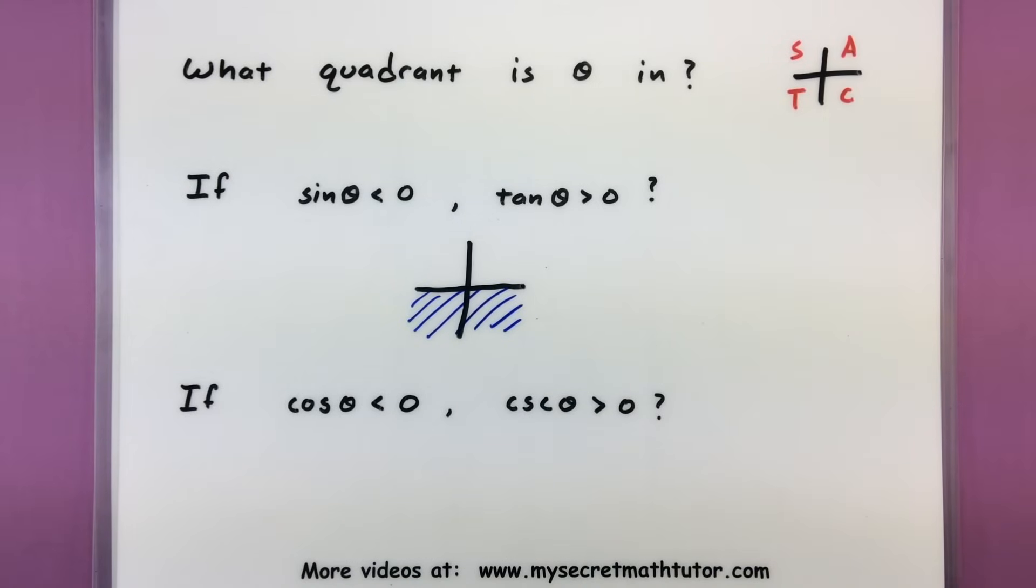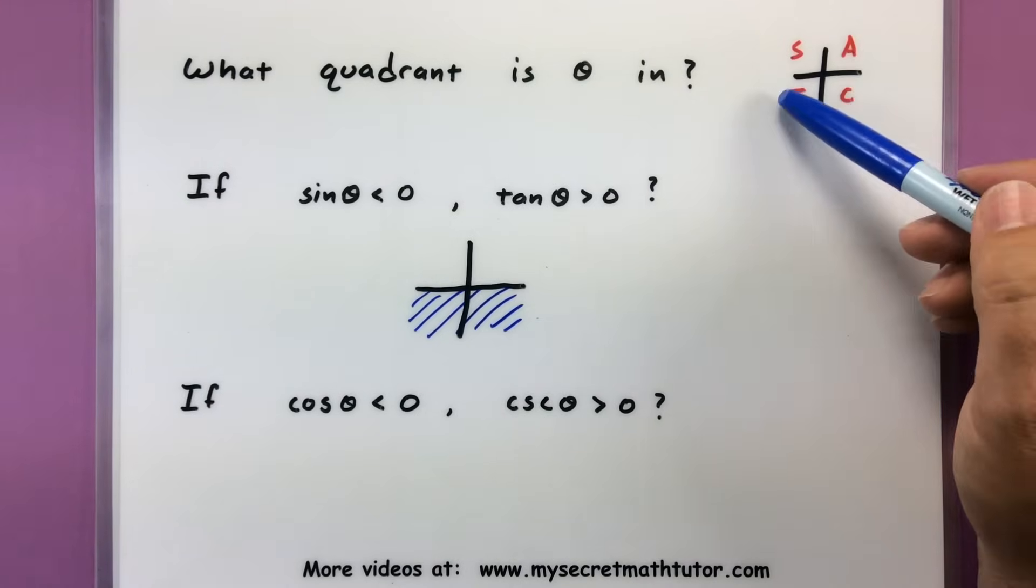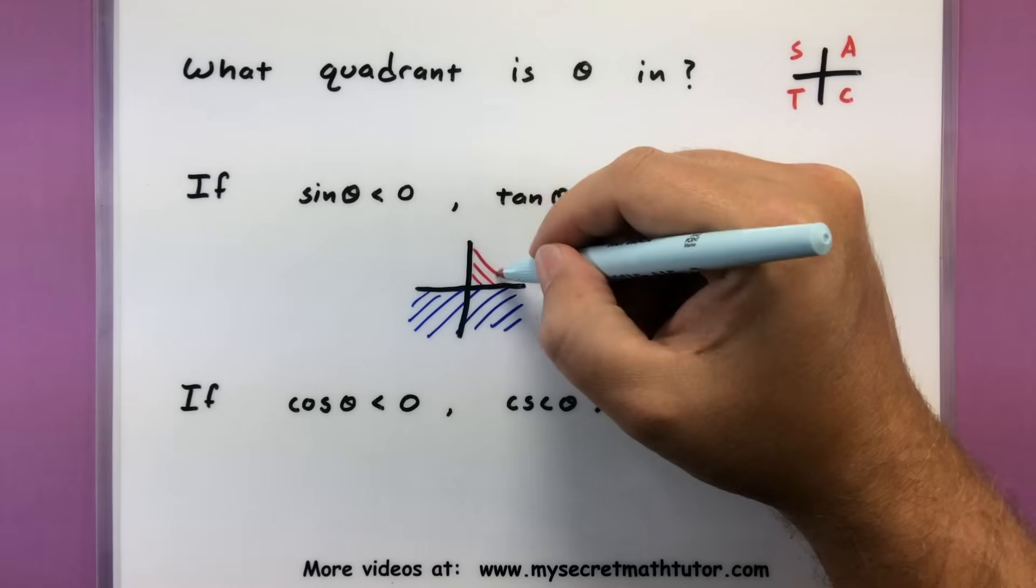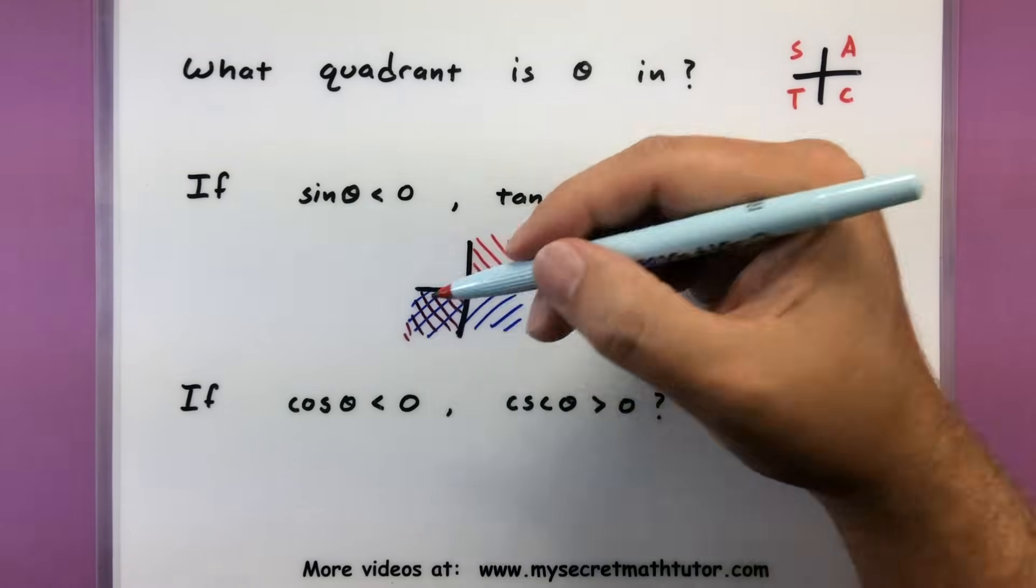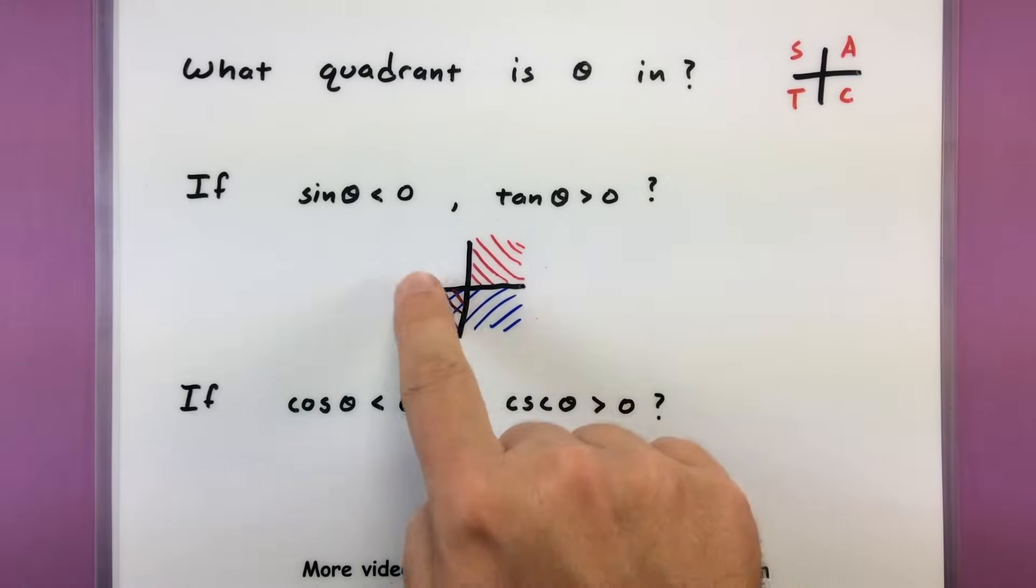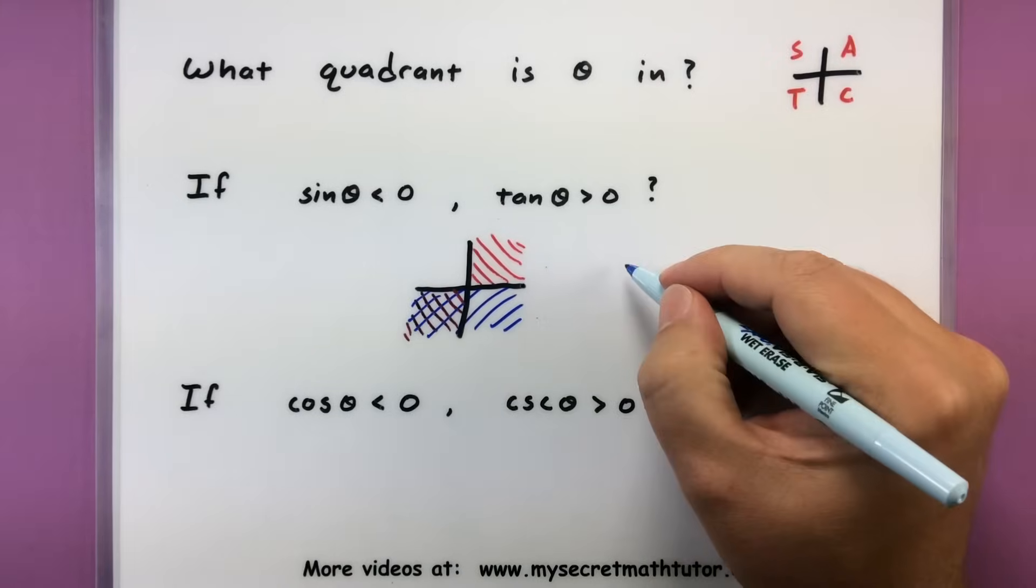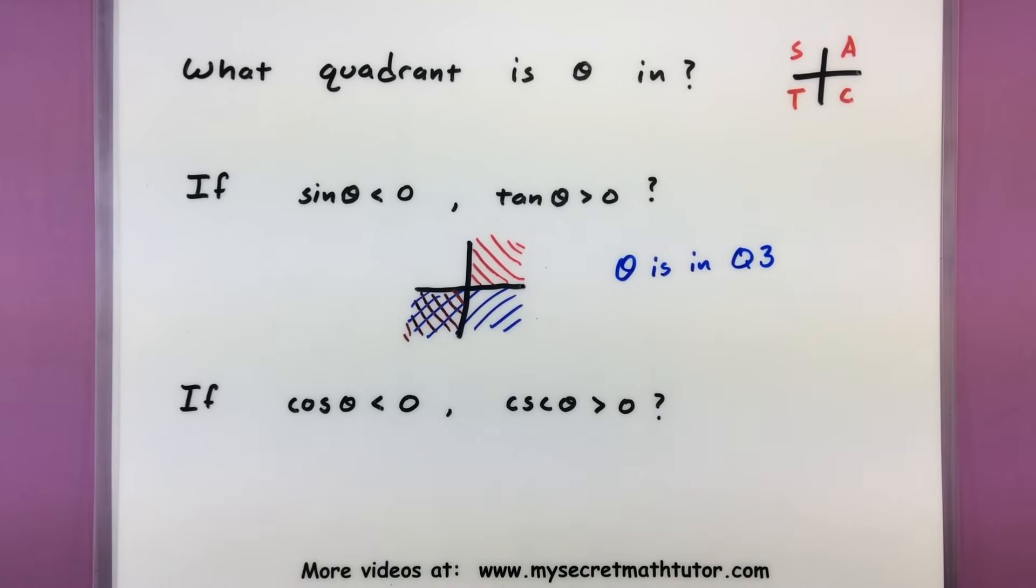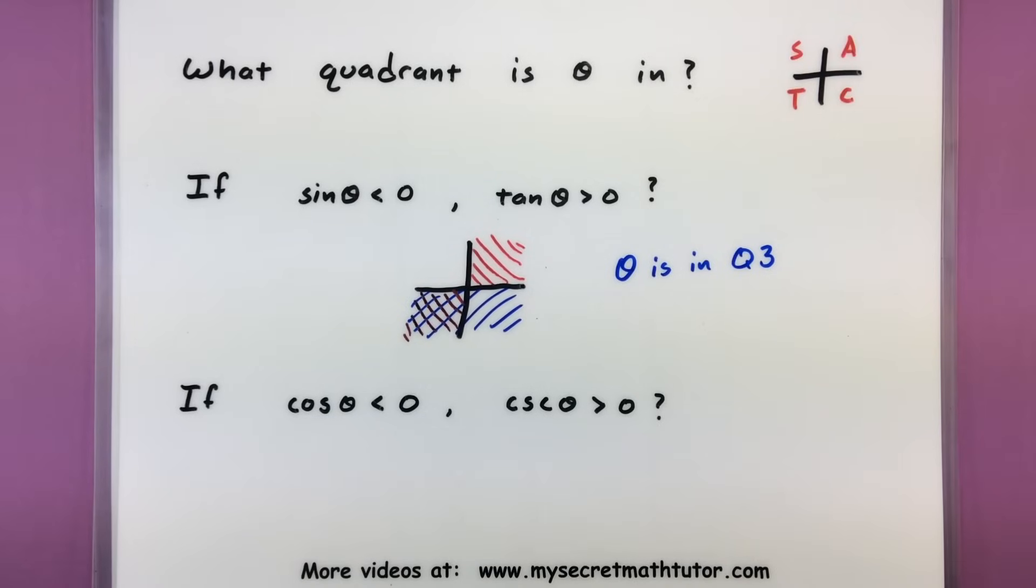Now, the next bit of information is that tangent is positive. So let's see, where's tangent positive? It's positive in the first quadrant, and it's positive in the third quadrant. So it could be here, or it could be down here. Now, there's only one quadrant where both of these things are happening, and sure enough, that is quadrant number three. So theta is in quadrant three. This really gives you information or a little hint about that angle. Let's do it again.